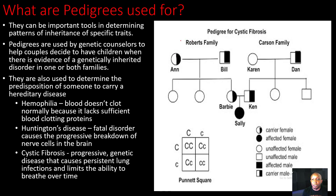In the Roberts family, the mom and the dad — Ann and Bill — are carriers for cystic fibrosis, and the way we can tell is because both of them are half shaded in. And if you notice in the Carson family, Dan is a carrier for cystic fibrosis, but his wife Karen is not. So if we look at their children, they have a normal son, a normal daughter, but then they have a son who is a carrier for cystic fibrosis — so Ken is a carrier.